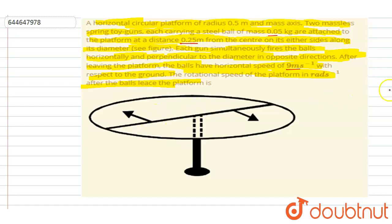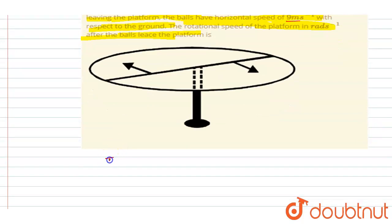...the net torque on the system is zero about this point, right? Because this will be the internal force. The gun is attached here, so it will apply equal and opposite force and the line of action of force is at a distance of 0.25 m.